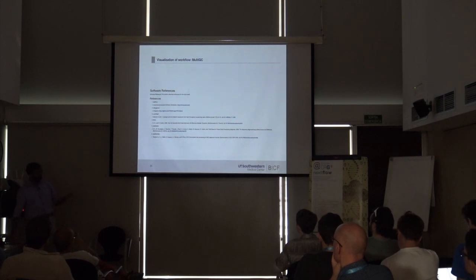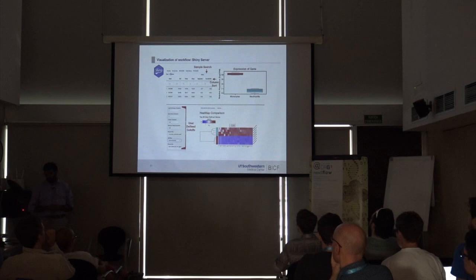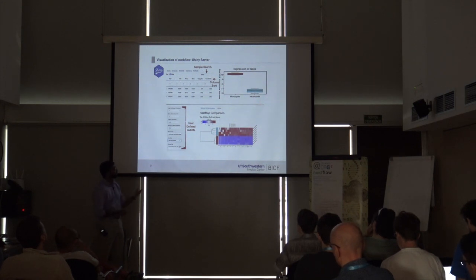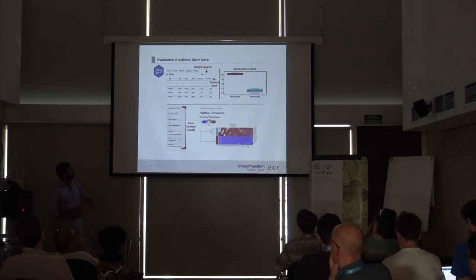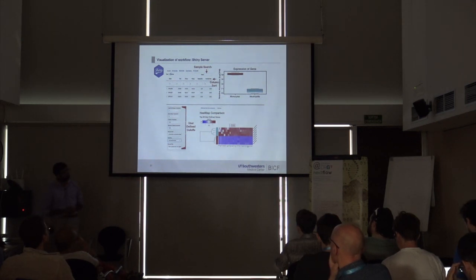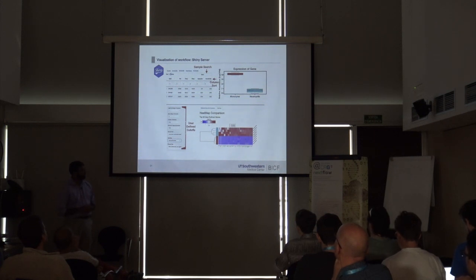Static reports weren't enough for some clinicians who wanted to create box plots and custom visualizations. So we created Shiny apps that do the same QC metrics but allow sorting, column filtering, searching by gene expression, generating box plots, and downloading figure-quality images. For differential gene expression or GSEA, users can filter by log-fold change, p-value, or anything they want, generate heat maps and download them. Users just download the output and run the Shiny app locally without needing to install R. This lets us spend more time developing pipelines rather than making box plots for everyone at the university.